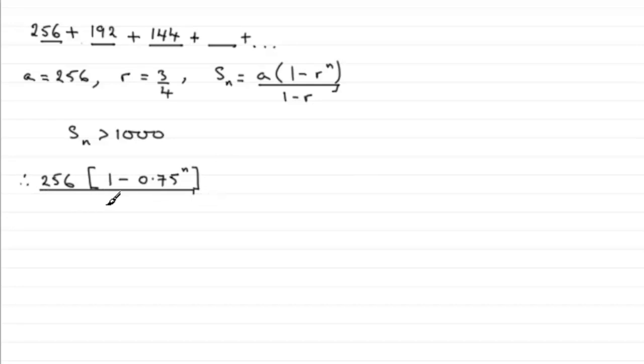And that's got to be greater than 1000. So we've got 1 minus 0.75, that's 0.25, and we could divide 256 by 0.25. If you do that, you're going to get 1024.